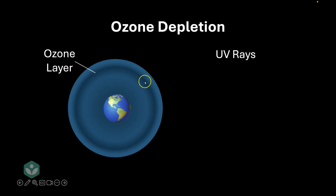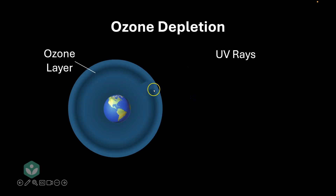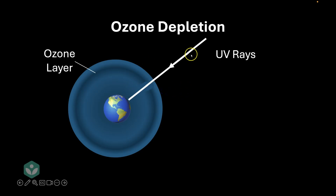This ozone gas protects us from UV rays. When an ultraviolet ray tries to enter the earth's atmosphere, the ozone layer absorbs it and protects the earth. Now, certain pollutants have caused a hole to develop in the ozone layer. Because of this, UV rays can get through and hit the earth's surface, causing harm.